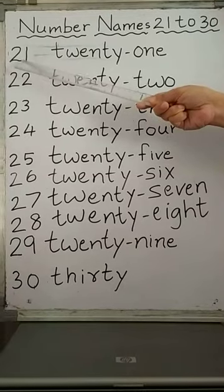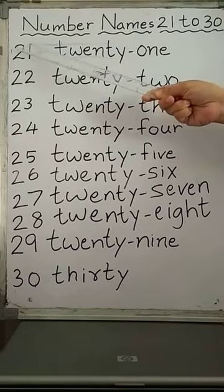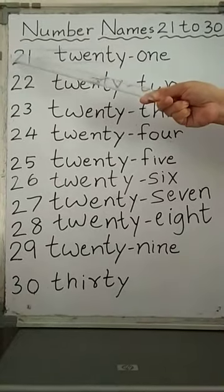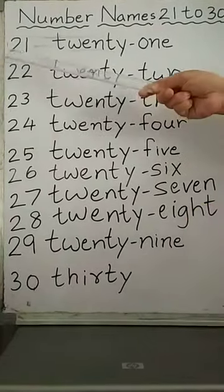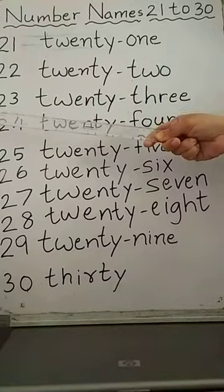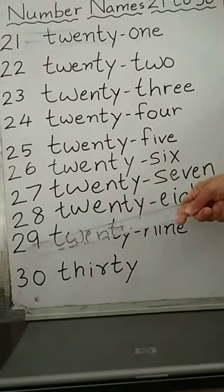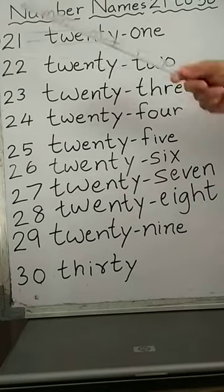Children, as you know, when we say number name from 21 to 30, the numerals which are coming under 21 to 30 are 21, 22, 23, 24, 25, 26, 27, 28, 29, 30.